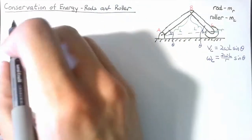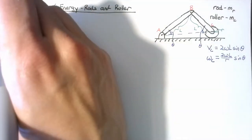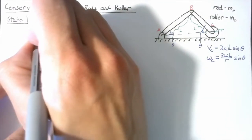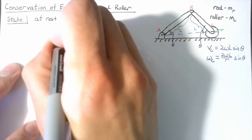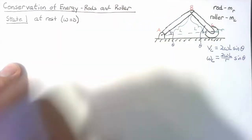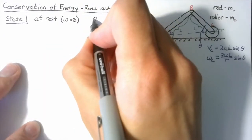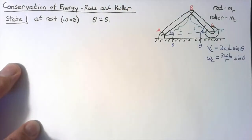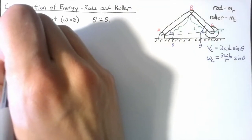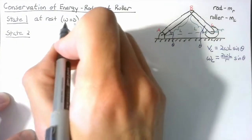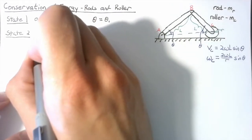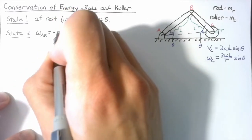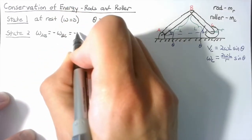With conservation of energy, we're looking at two separate states. State one is our initial state — we're going to say that this is at rest, which means omega equals zero, and theta equals some unknown value theta_1. For state two, we don't know our omega value, so we say omega of rod AB equals negative omega of rod BC, which we call negative omega, and theta equals theta_2.